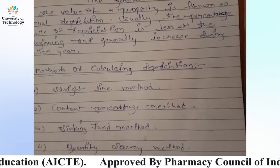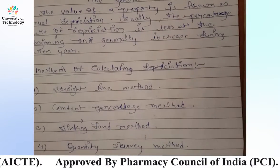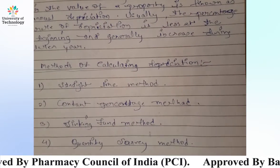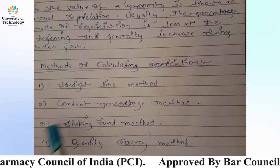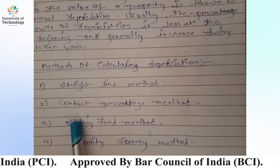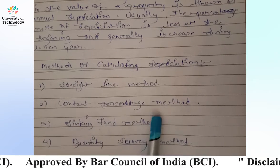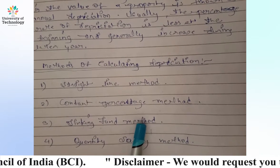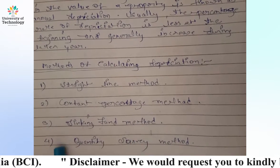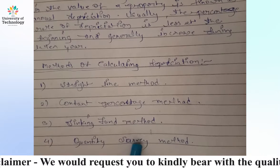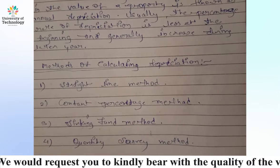Now let's see the methods for calculating depreciation. The first method is the Straight Line Method. Second is the Constant Percentage Method. Third is the Sinking Fund Method. Fourth is the Quantity Survey Method.